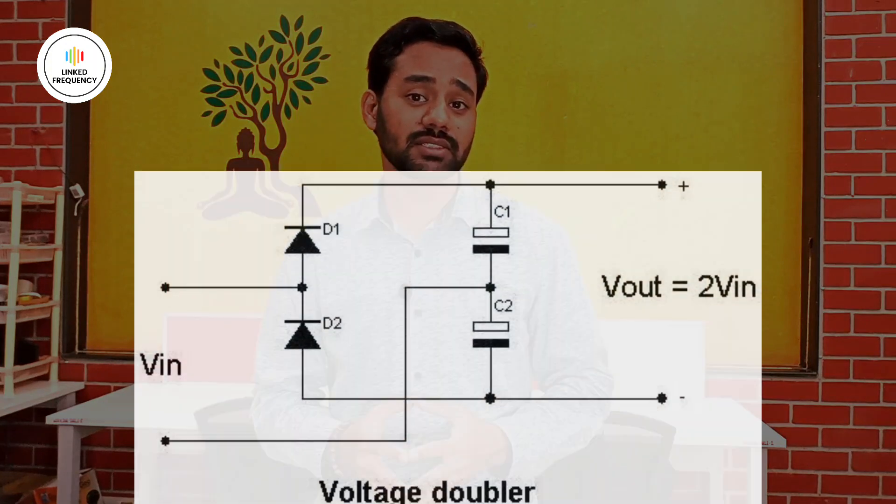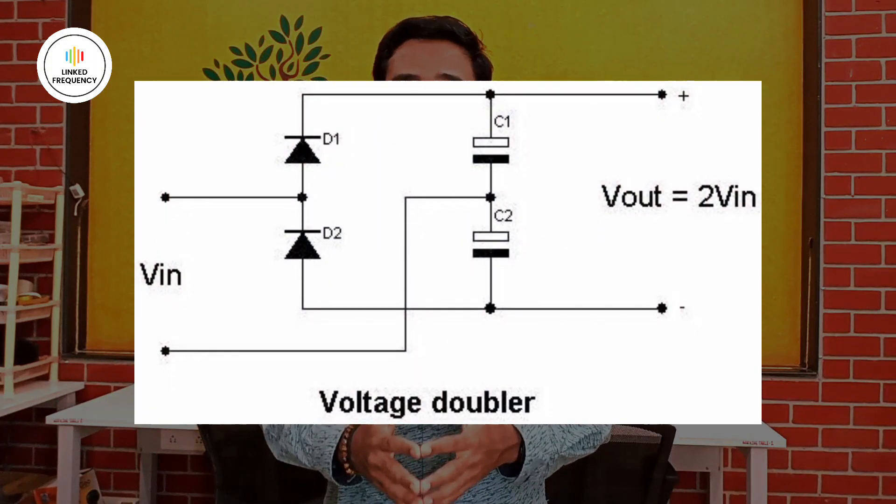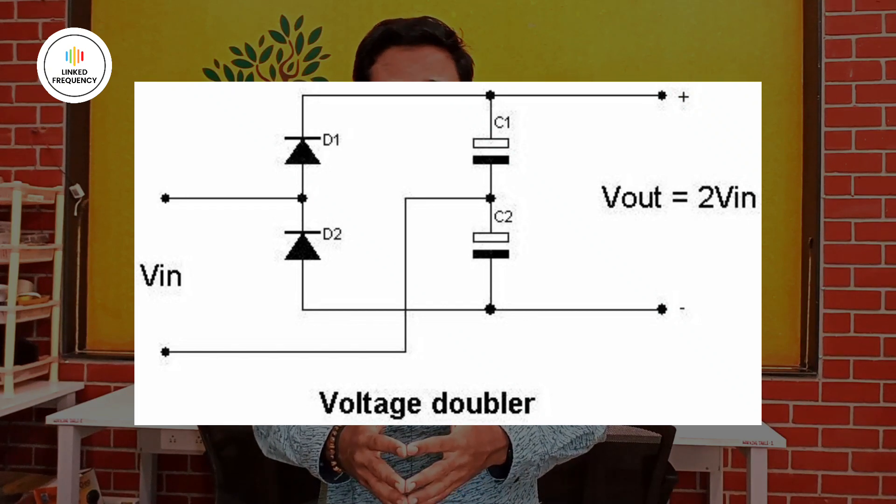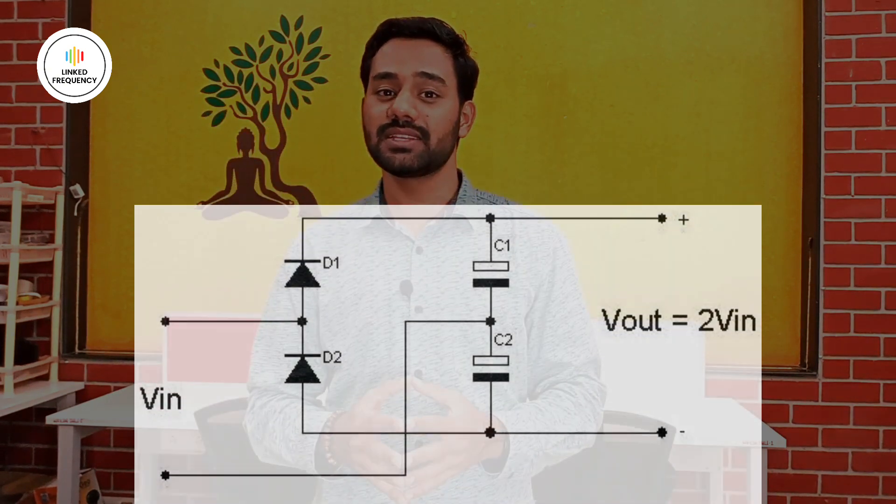The third application is a voltage doubler circuit using a capacitor. When designing certain systems we need to step up the voltage beyond the input — for example, a 5V input but a 15V or 20V output needed. If a step-up transformer is not available, we can use a capacitor as a doubler to double the input voltage. AC doublers and DC doublers are widely used, and voltage triplers are also available using capacitors for high-voltage generation from a low-voltage input.